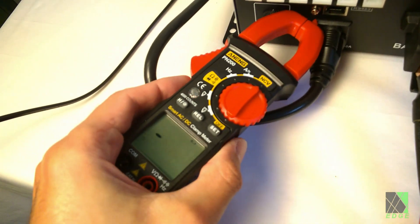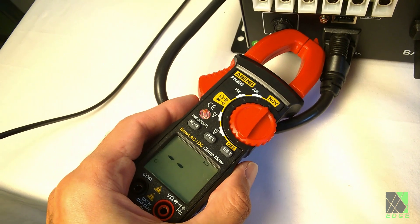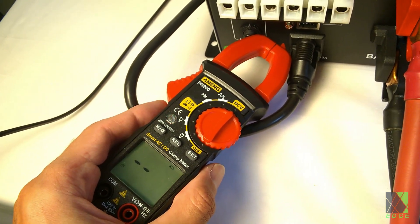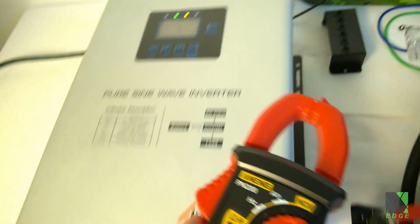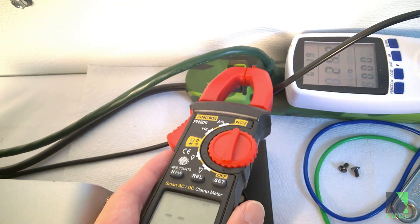Turning it into NCV mode, we can quickly check wires to see if there's an AC current flowing. For example, this inverter is powered on and it's easy to see if a particular line is electrified or not.